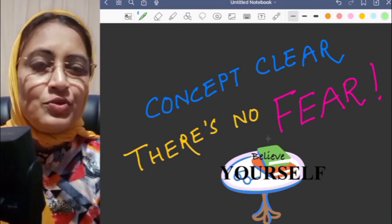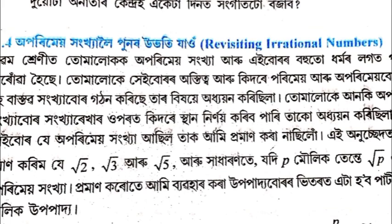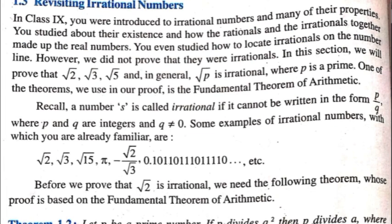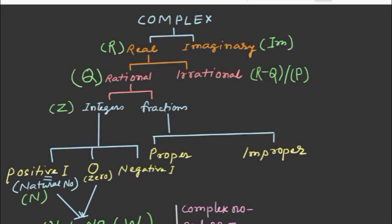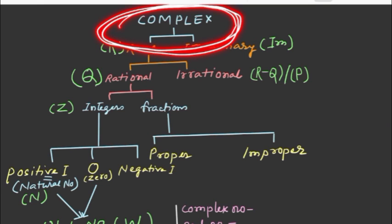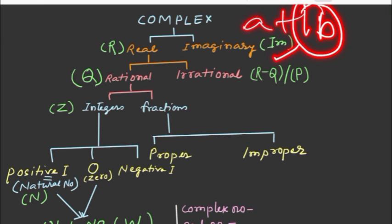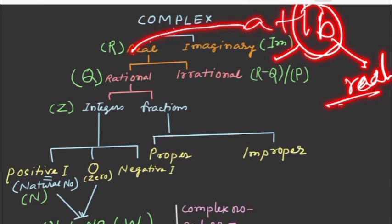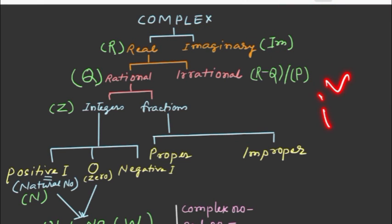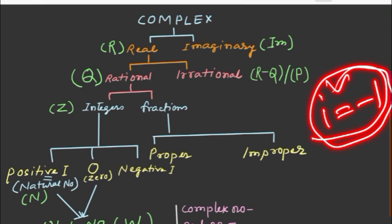Let's start. I will recall the idea. The complex numbers are of the form A plus iB. A plus iB is an imaginary number. A is a real number and B is also a real number. A real and imaginary number together form a complex number. Imaginary means i squared is equal to minus 1; i is the square root of minus 1.